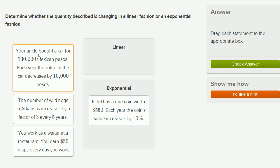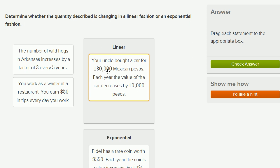Your uncle bought a car for 130,000 Mexican pesos. Each year the value of the car decreases by 10,000 pesos. So here we're not multiplying by a factor. We're decreasing by a fixed amount. One year goes by, we're at 120,000. Two years goes by, we're at 110,000. So this is definitely linear, this can be described by a linear model.